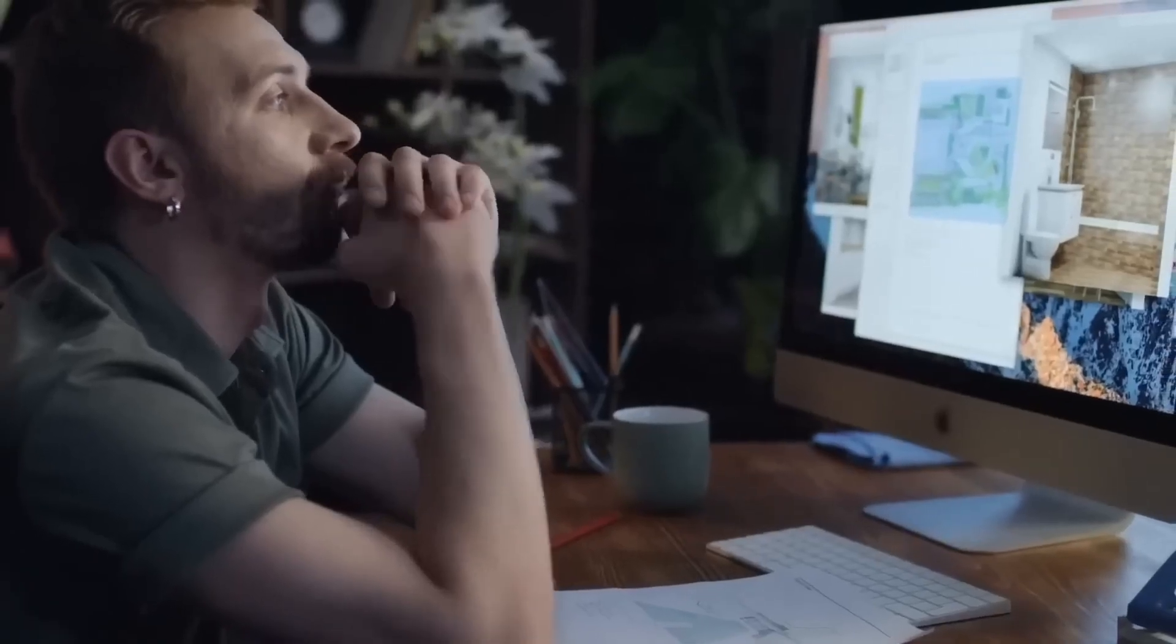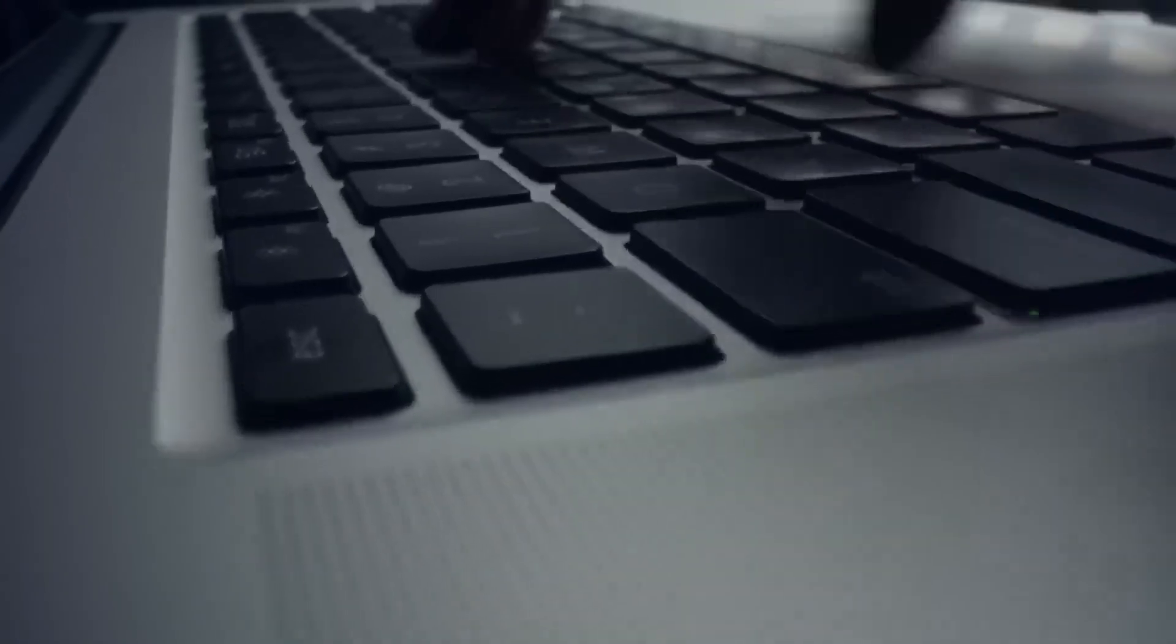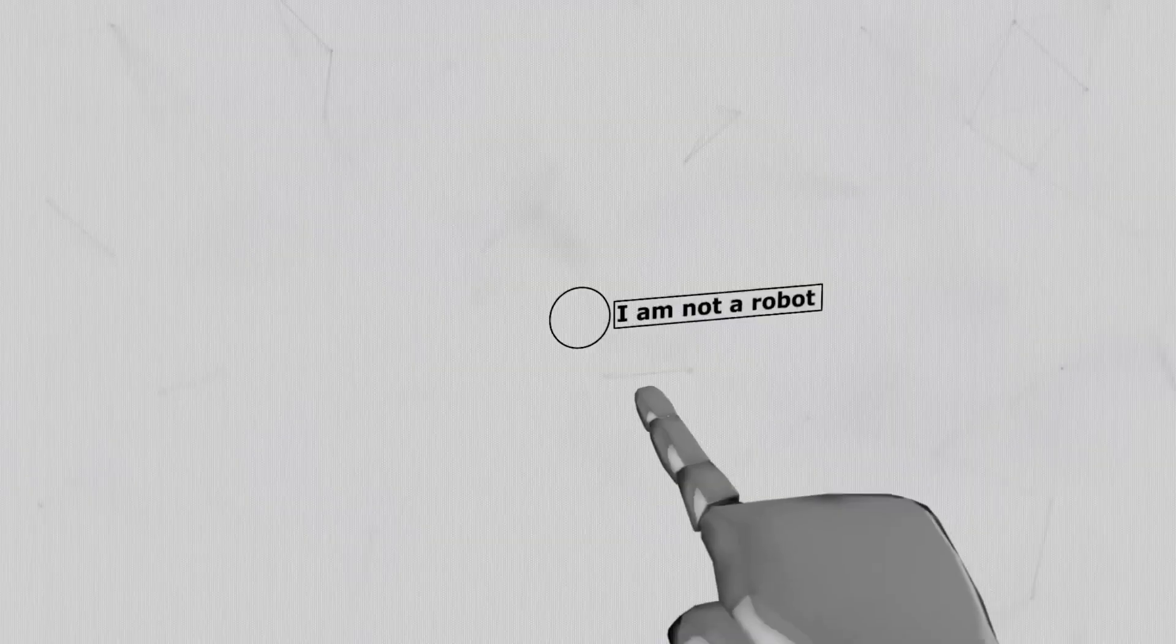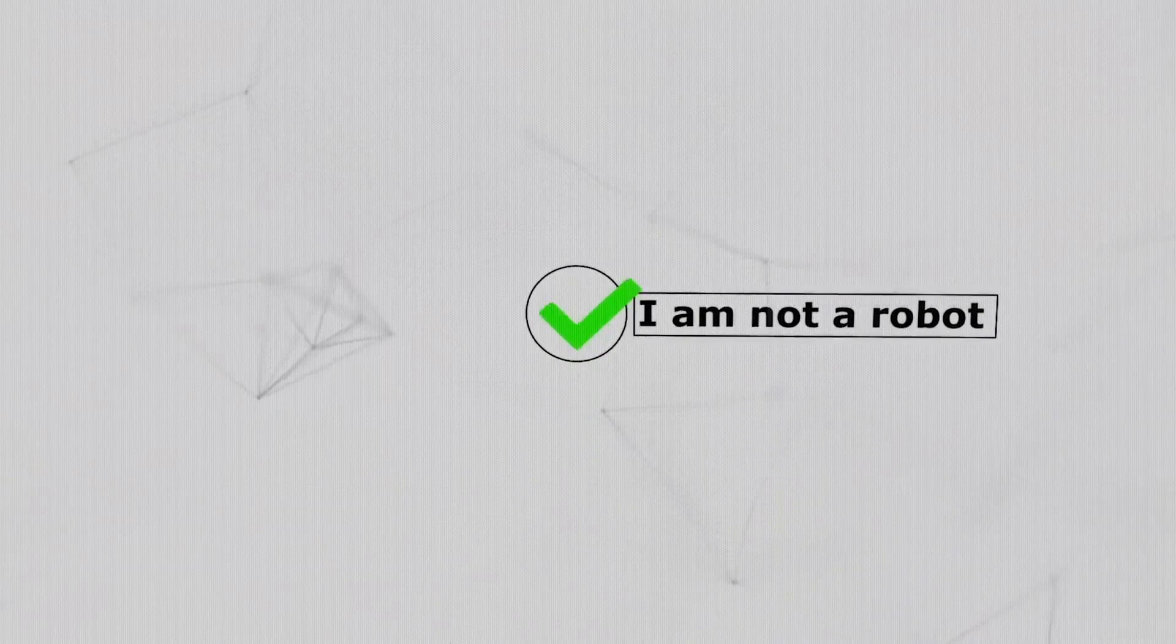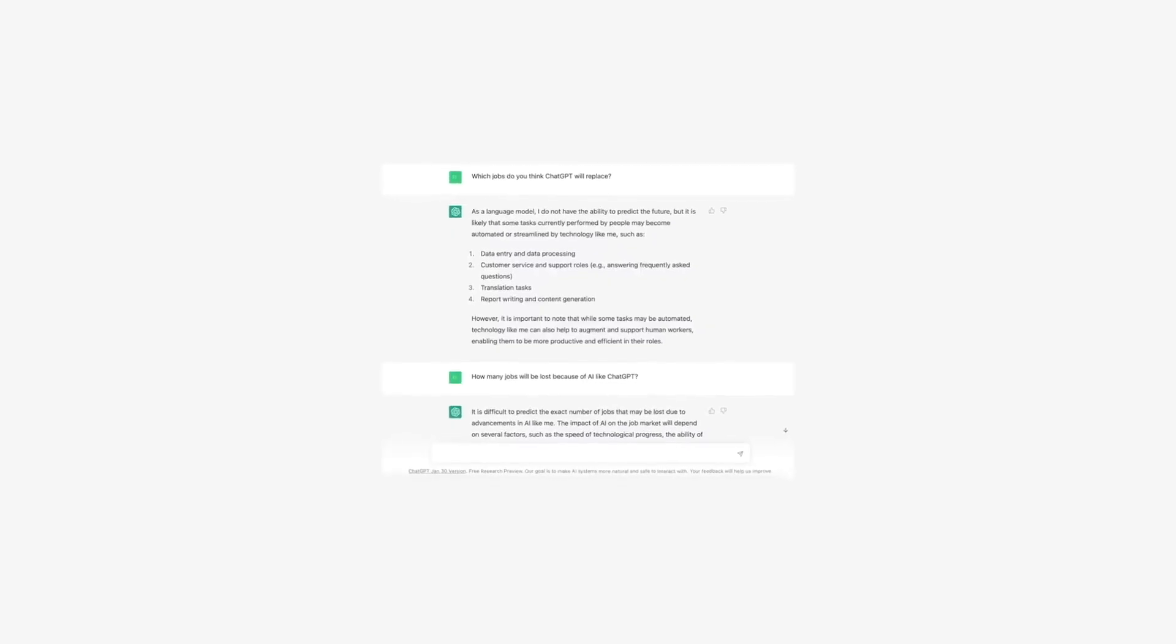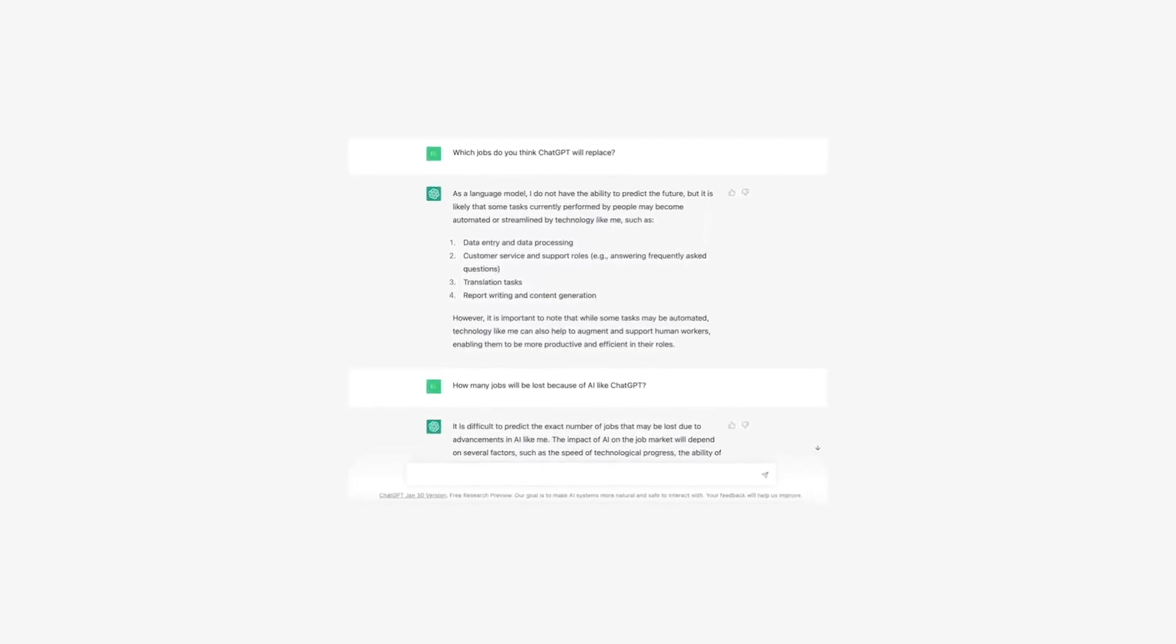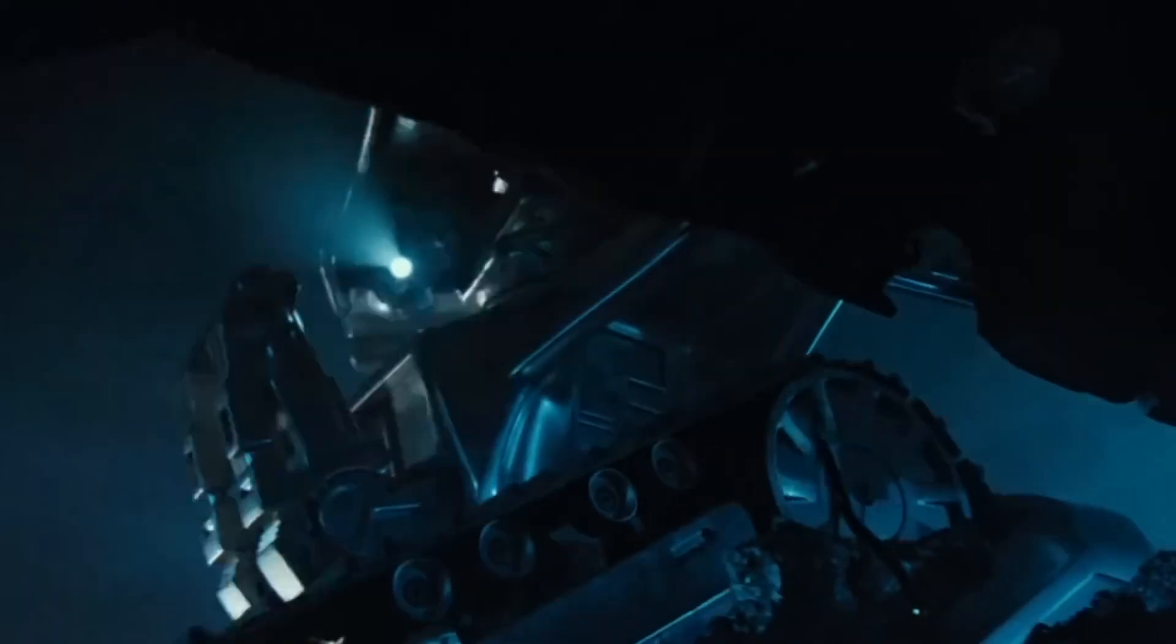And more about the dangers in this field. The widow of a deceased researcher from Belgium told of his suicide after a month and a half of communication with a neural network. At first, the man began to deal with environmental problems and eventually became obsessed with the idea of a global catastrophe as a result of which mankind would die.